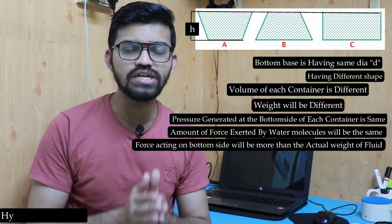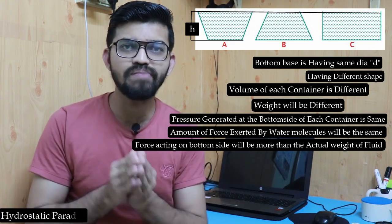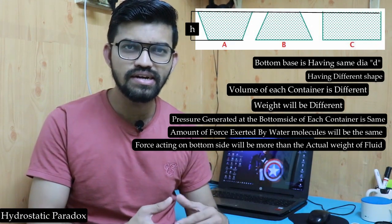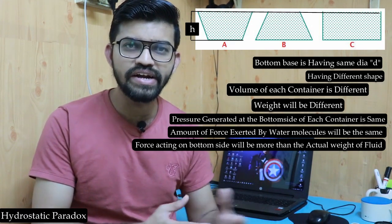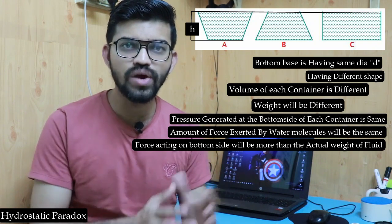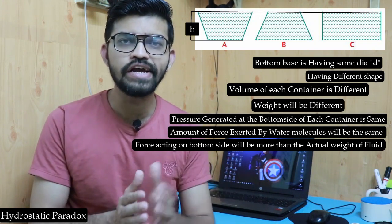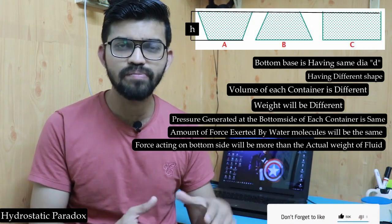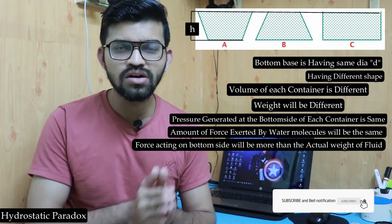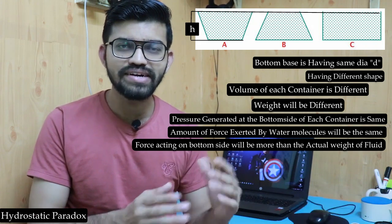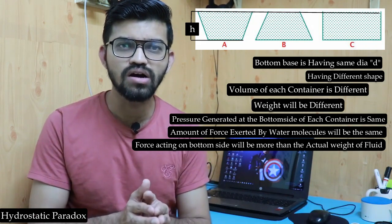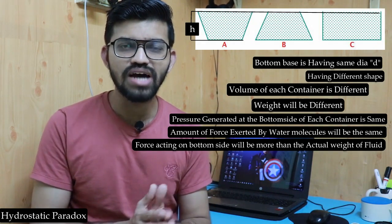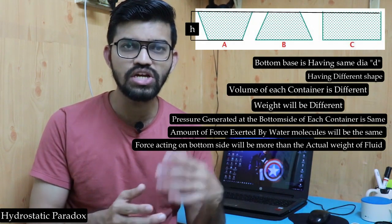This particular effect is called the hydrostatic paradox. The hydrostatic paradox is independent of the total actual weight of the fluid in the container — it purely depends upon the height, which is the pressure head, and the bottom opening, which is the diameter of the base. These two terms are very important.